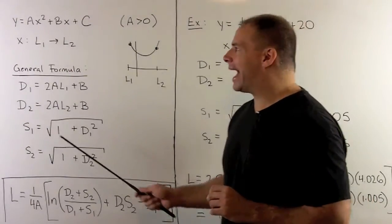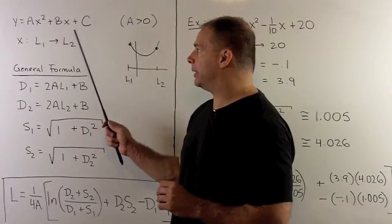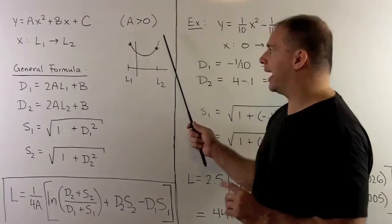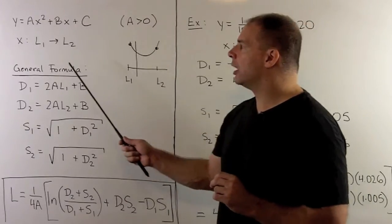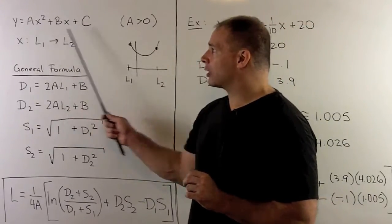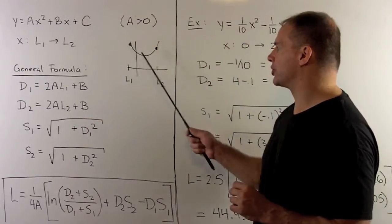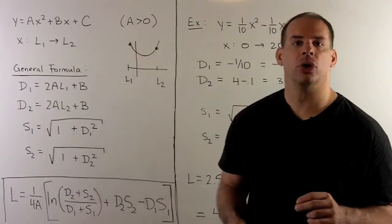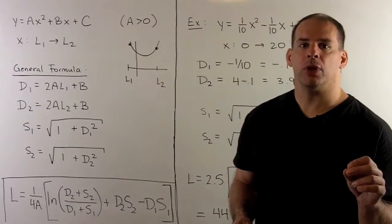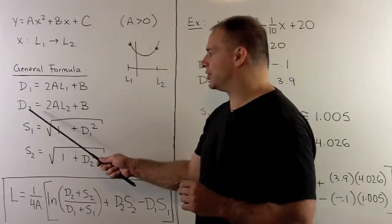If we have y equal to ax squared plus bx plus c, I assume a is a positive number. We're going to have arc length measured from x equal to l1 to x equal to l2. For the general formula, we first compute d1 and d2.